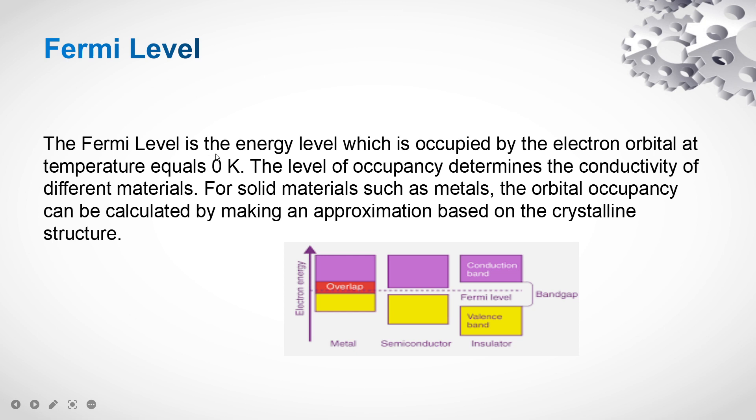What is Fermi level? Fermi level is the energy level which is occupied by the electron orbital at temperature equal to zero Kelvin. In case of metal, the valence band and conduction band are overlapping. Whereas in semiconductor, the valence band and conduction band are at some intermediate gap from the Fermi level. But in insulator, valence band and conduction band are far away from each other.